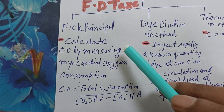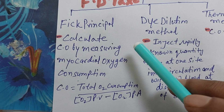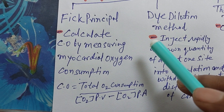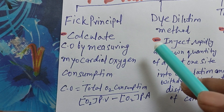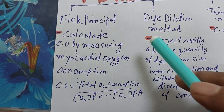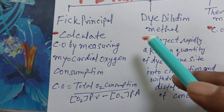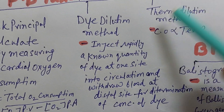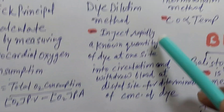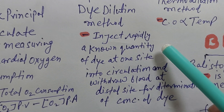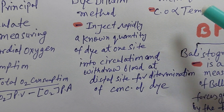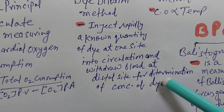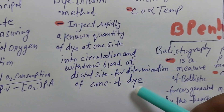In the Fick principle, we calculate cardiac output by measuring myocardial oxygen consumption. Cardiac output equals O2 consumption divided by O2 in pulmonary vein minus O2 in pulmonary artery. In the second method, the dye dilution method, we inject a rapidly known quantity of dye at one site into circulation and withdraw blood at a distal site for determination of concentration of dye.